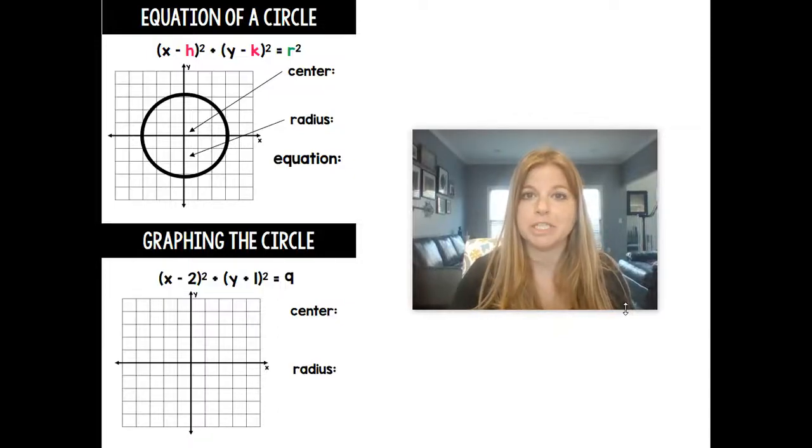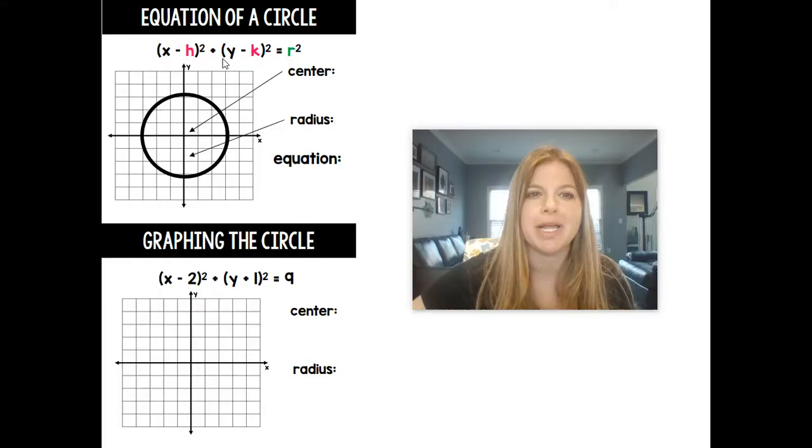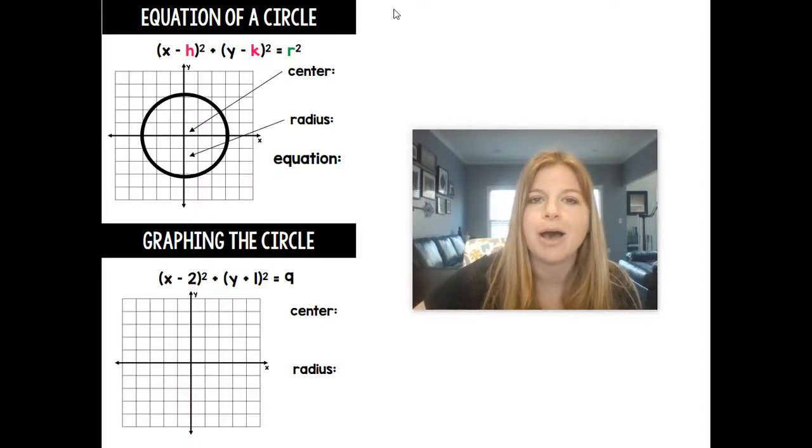Hi guys, welcome to this video where we're going to talk about the equations of circles. The equation formula of a circle is x minus h squared plus y minus k squared equals r squared. Now you should remember h and k from your vertex form for quadratics, absolute value functions, all of your formulas from algebra 1. But now it's actually in the equation of a circle.